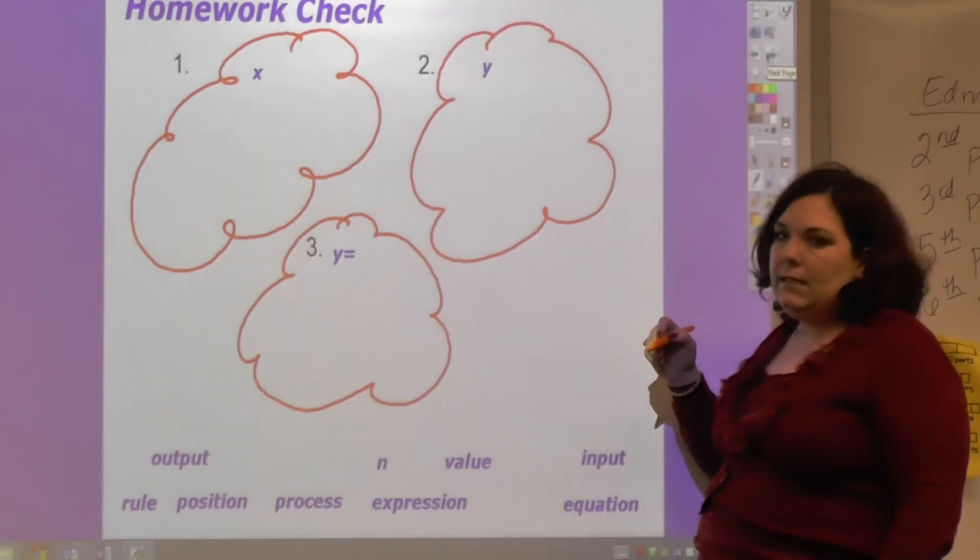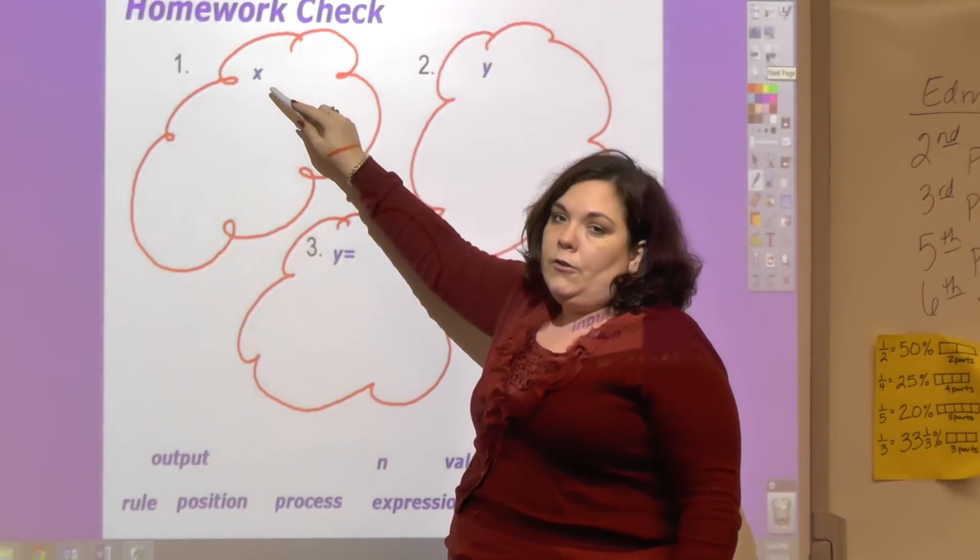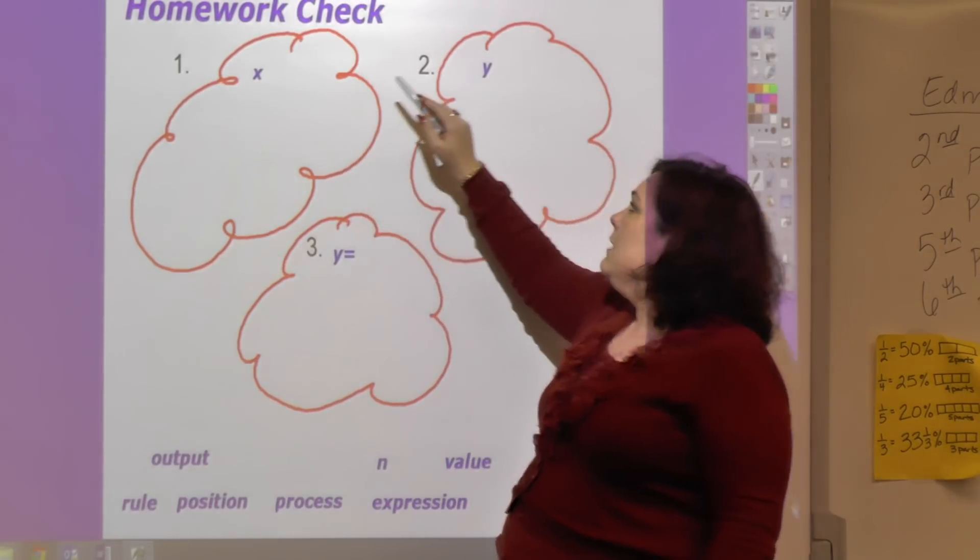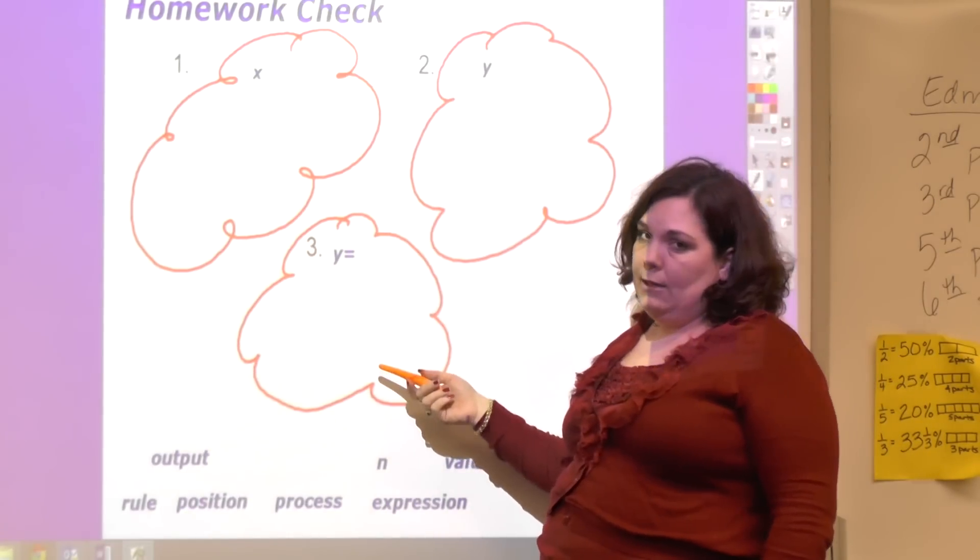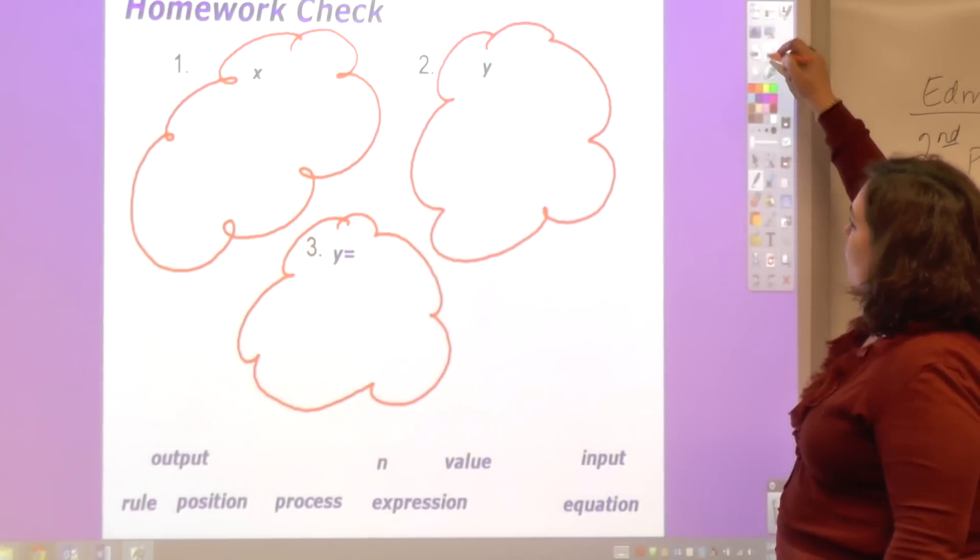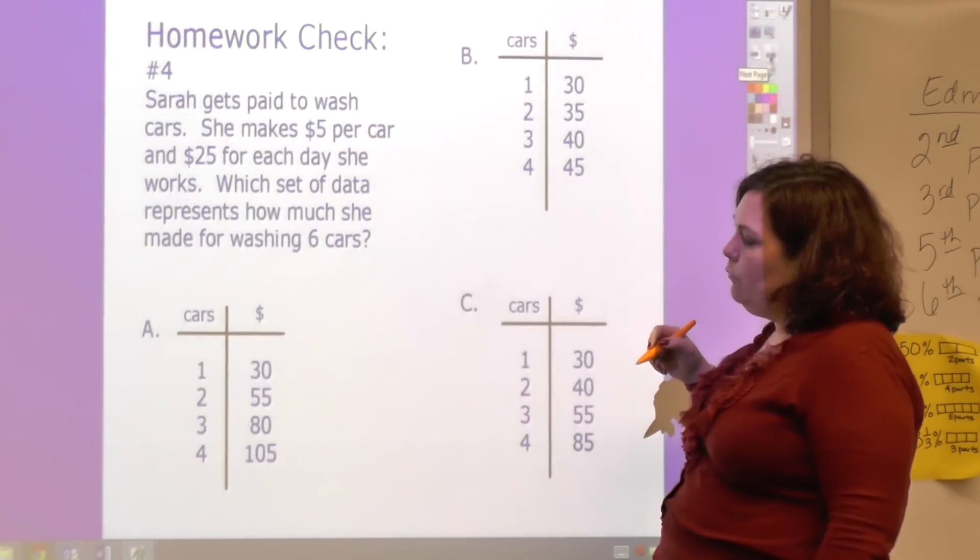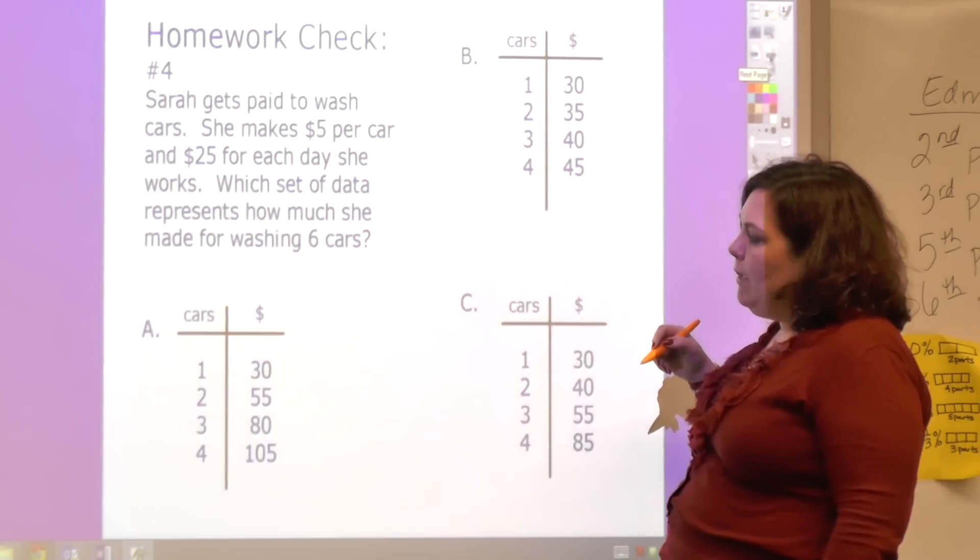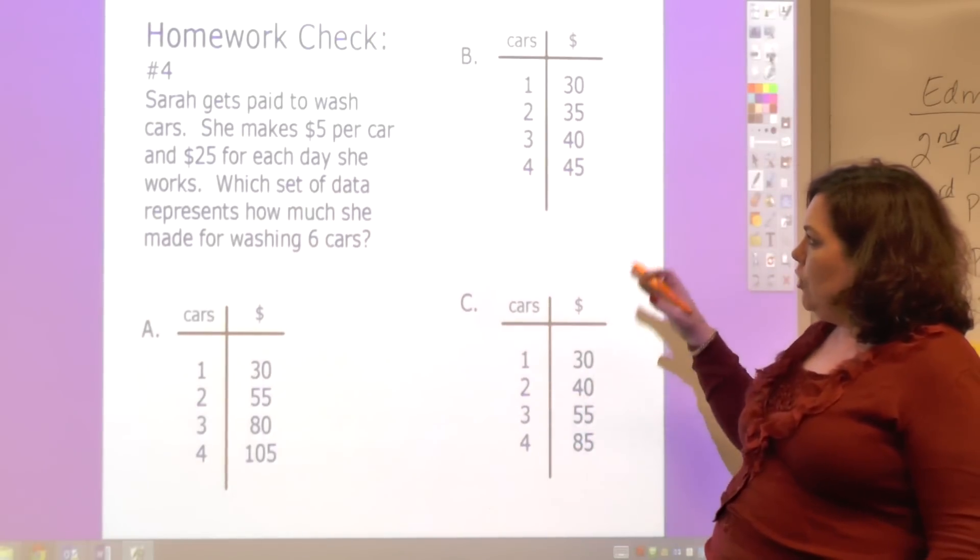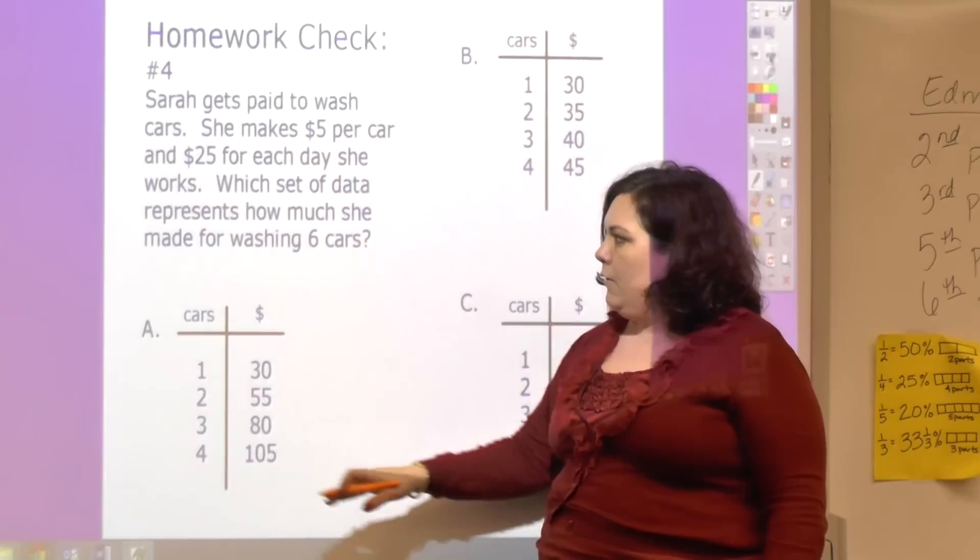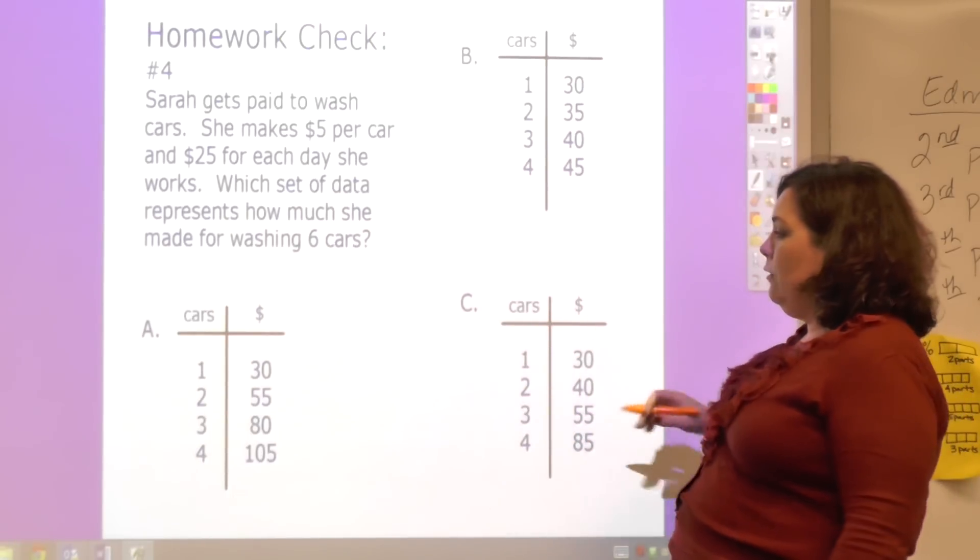Your homework check, and this is on your Google form in Edmodo, is to say all the other things that are named synonymous with X and all the names that are all the items that go with Y and all the items that go with Y equals. And then your fourth question is Sarah gets paid to wash cars. She makes $5 per car and $25 for each day she works. Which set of data represents how much she made for washing six cars? It doesn't show six, but it shows you the data of up to four. Which one of these has the data correctly? And you pick the one that would be it.